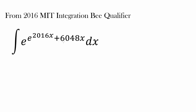Now the first thing you may realize is that 6048 and 2016 are very closely related. In fact, 6048 is equal to 2016 times 3. So maybe we can use this connection as we go further along the problem, or maybe this connection is going to hint us at what u-substitution is going to be.